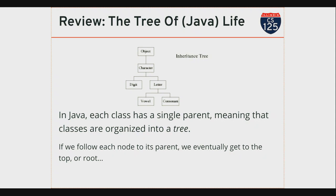Java's class system is categorical. Everything is an object, but some objects are characters and some are not. Some characters are digits and some are letters; some letters are vowels or consonants. As we go down, we're splitting things into smaller and smaller categories. Putting something into a category means we understand something about it — once I determine whether a character is a vowel or consonant, that requires knowing something more about that character.